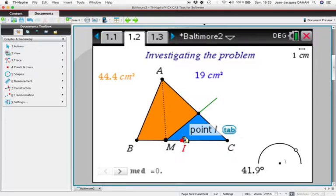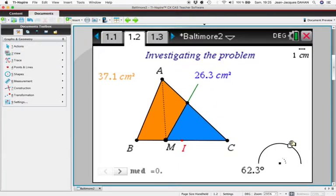So you can see that we have a line here, which is the median in reality, and we can change the position. We have displayed the areas of the two parts.